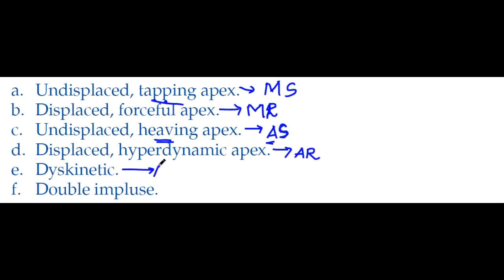beat is anterior wall MI showing dyskinetic apex beat. Double impulse is seen in cardiomyopathy. Important thing: if it is a stenotic lesion, you will see an undisplaced apex beat. If it is a regurgitation lesion, you will see displaced apex beat.